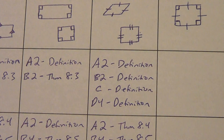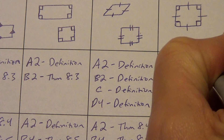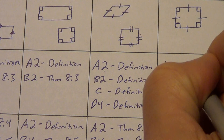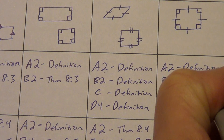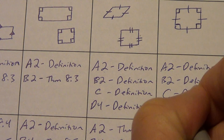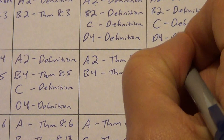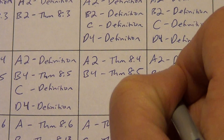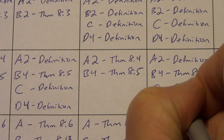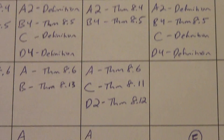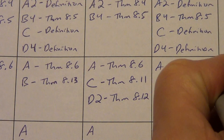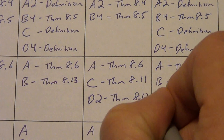A2 is true for both by definition. B2 is true by definition or theorem 8.3. We could use definition or theorem 8.3 over here as well. C by definition. D4 by definition. Down to this box: A2 by definition or theorem 8.4. B4 by theorem 8.5. C by definition. D4 by definition. Let's go down to this box: A by theorem 8.6, B by theorem 8.13, C by theorem 8.11, D2 by theorem 8.12.